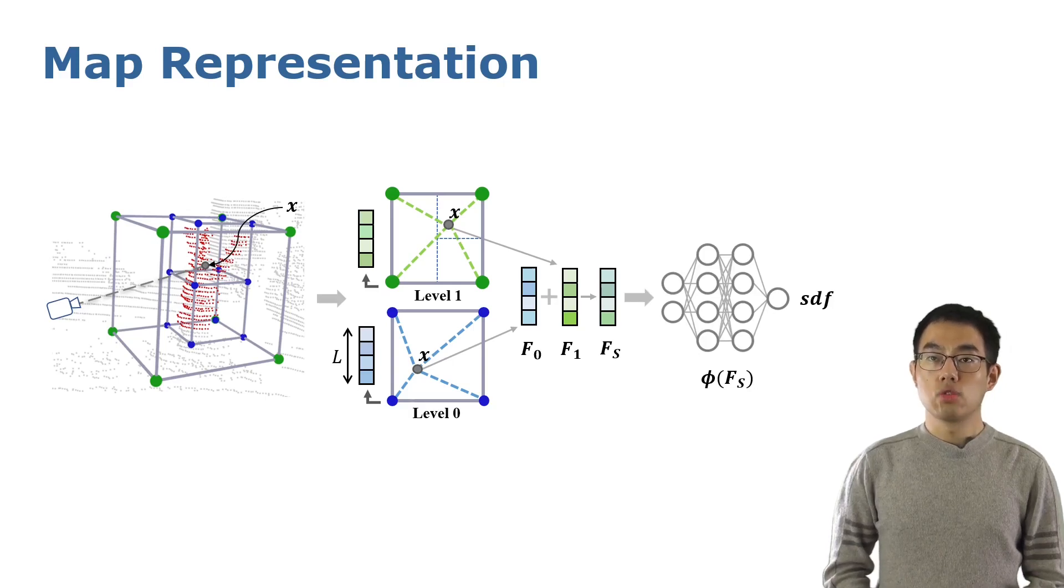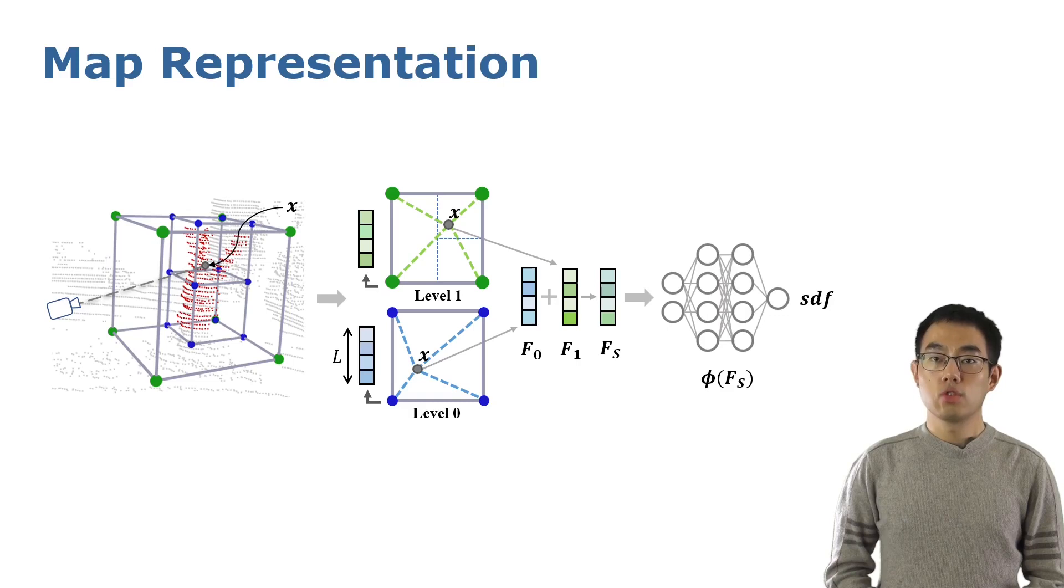Finally, we fit it into a small neural network and regard the output as the signed distance value of this coordinate. As the whole process is differentiable, we can optimize the network and the feature octree jointly by back-propagation.